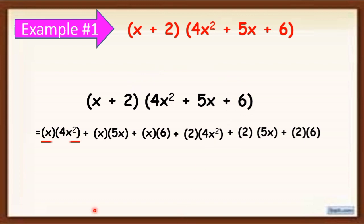Now let's simplify. x times 4x squared is equal to 4x cubed. What you are going to do is apply the laws of exponents — multiplying powers with the same base. So, multiply the numerical coefficient, copy the base, and add the exponents.